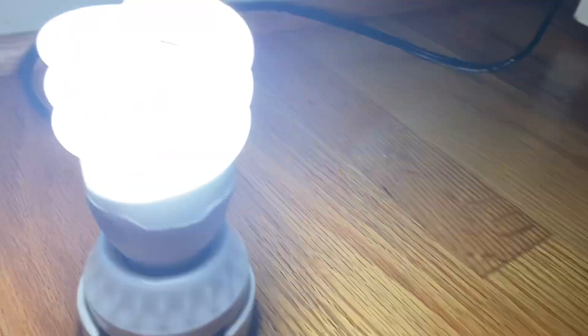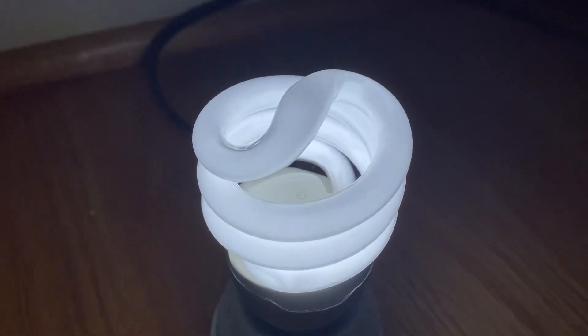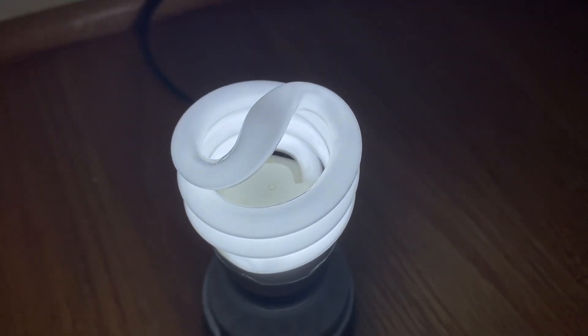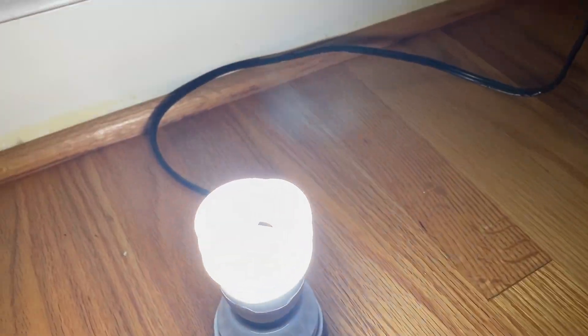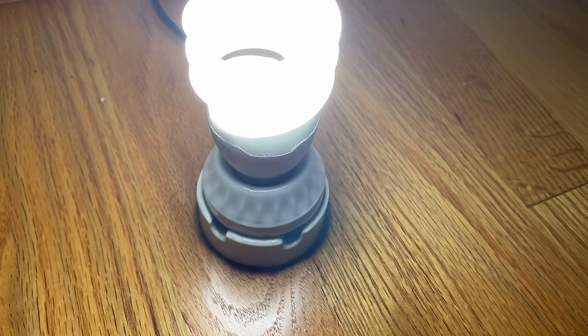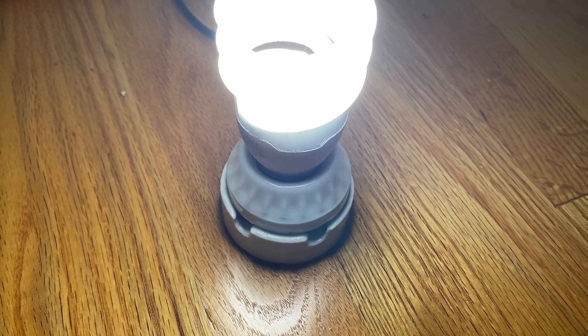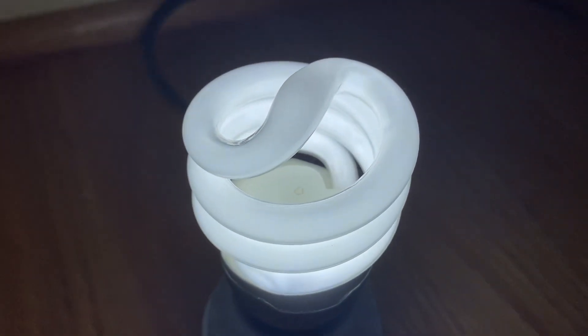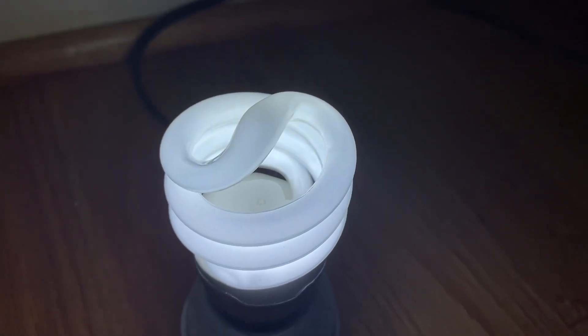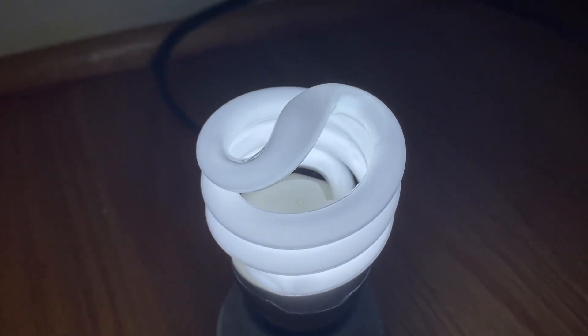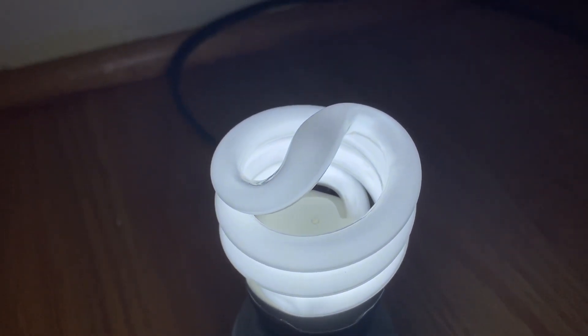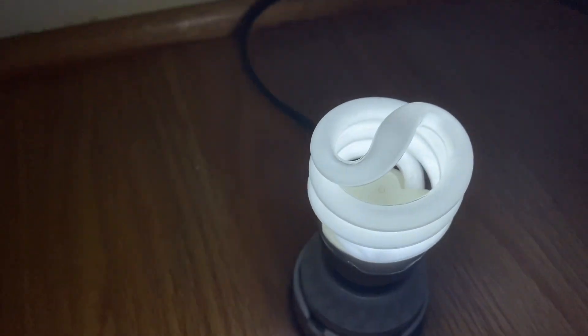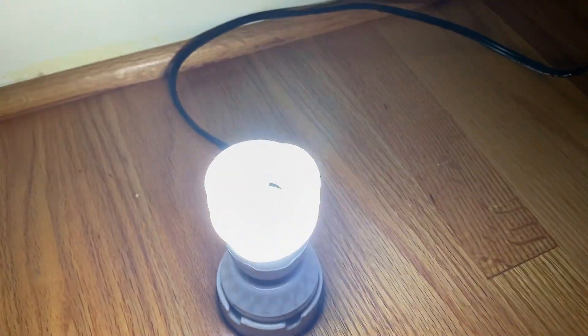This was like the second mini twister CFL they had there. When I was at Goodwill, I also got another mini twister which I'll show in another video, and some TDK SA C90 cassette tape. Well anyway, that's enough of me rambling.